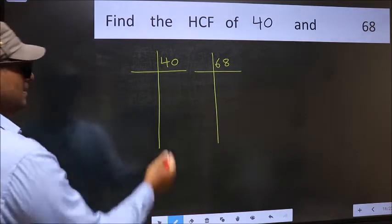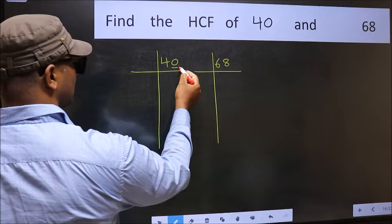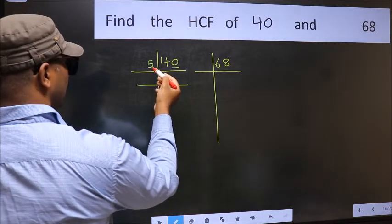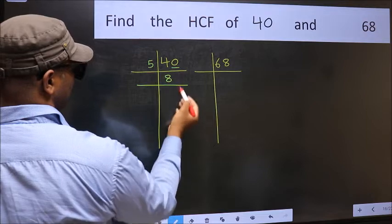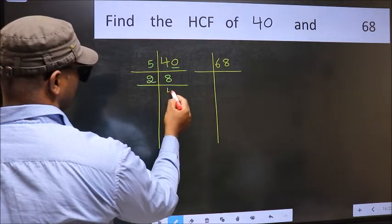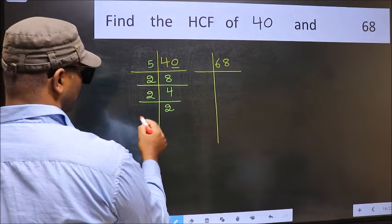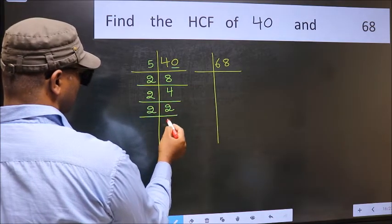Next, in this number, last digit is 0 so take 5. When do we get 40 in the 5 table? 5 times 8 is 40. Now 8 is 2 times 4 is 8, 4 is 2 times 2 is 4. Now 2 is a prime number so 2 times 1 is 2.